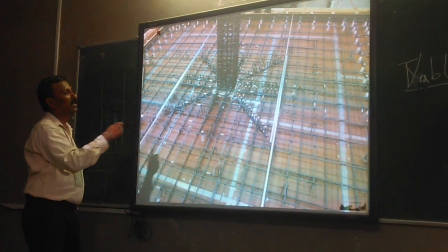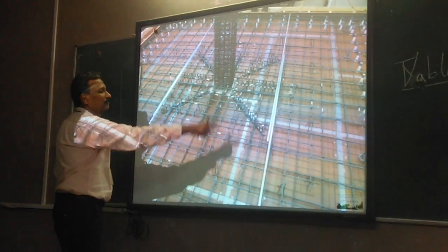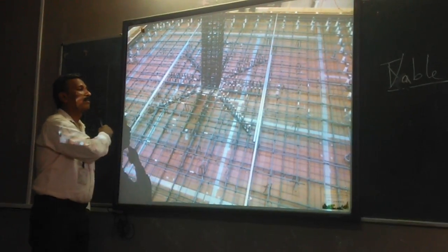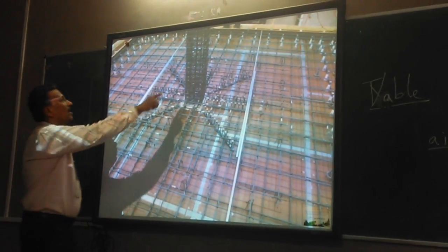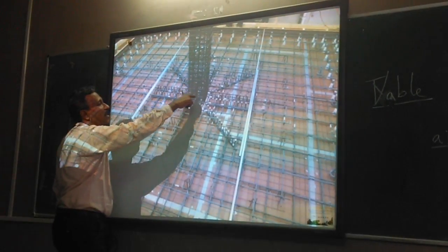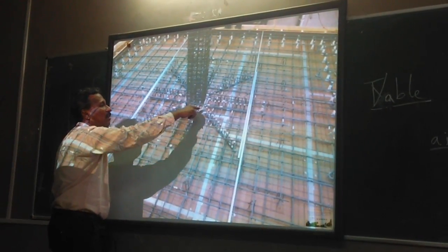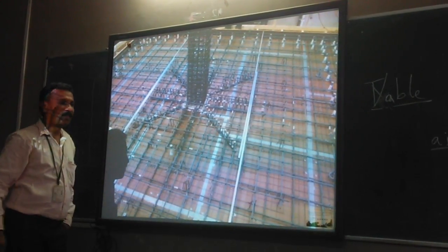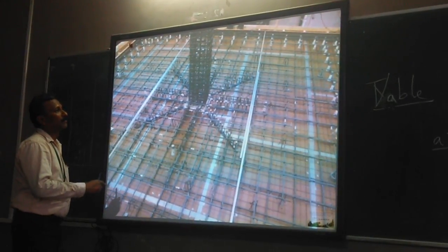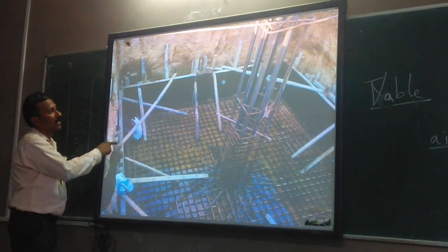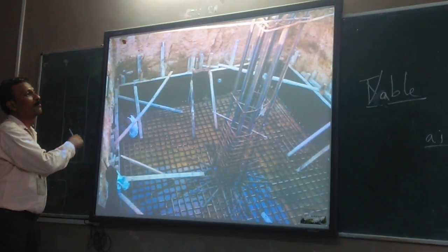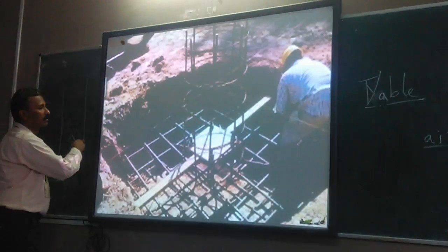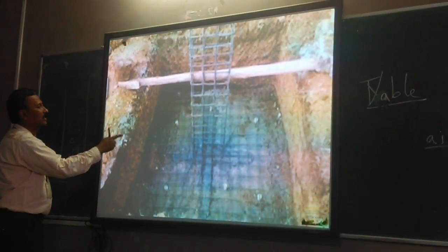Next is the reinforcement detail of the column. These rods are footing reinforcements. This is the column. The vertical reinforcements are called main rods. These main rods are bent up some distance above the bottom reinforcement of the footing. This is a circular column. This is a rectangular column.